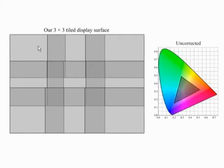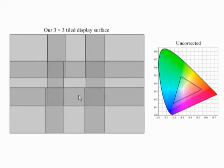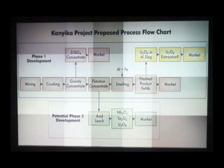Even when tiled displays are made from projectors of the same make and model, they show substantial color variation across the entire display. We visualize the spatial variation in color gamut here. The chrominance gamut, shown by the triangle, changes as we move from one point in the display to another. We visualize the brightness of the display by the brightness of the triangle. Note that this also changes significantly as we move from one point to another, especially when we cross the overlap regions. Any flicker in brightness or discontinuity in the changing shape of the triangle signifies a sharp discontinuity of color, resulting in distracting color variations across the display.